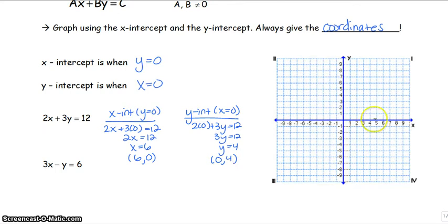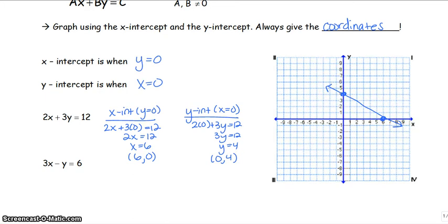When we go to graph this, we go to 6, 0, 0, 4, and we can make a quick graph just using those two points. Alright, and we can even make this even quicker.